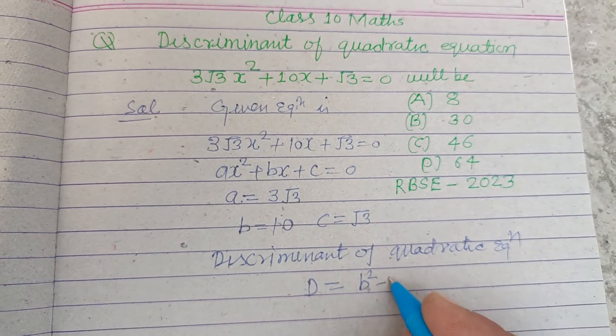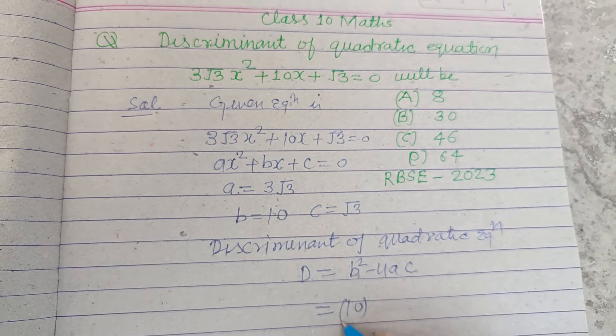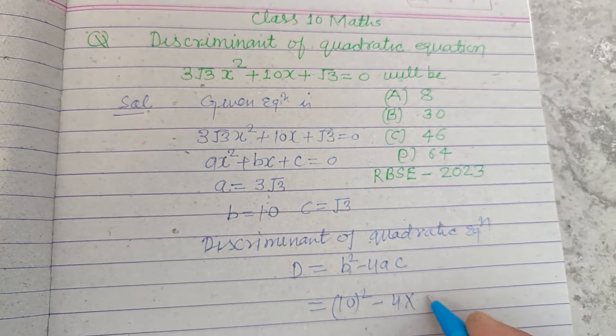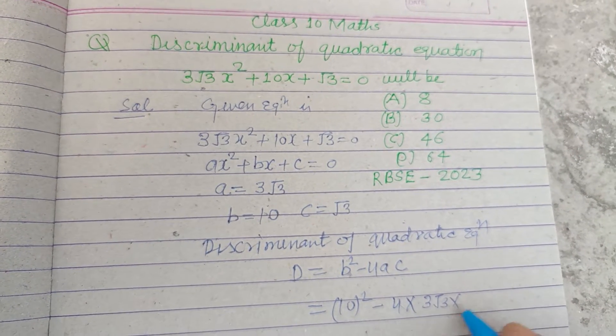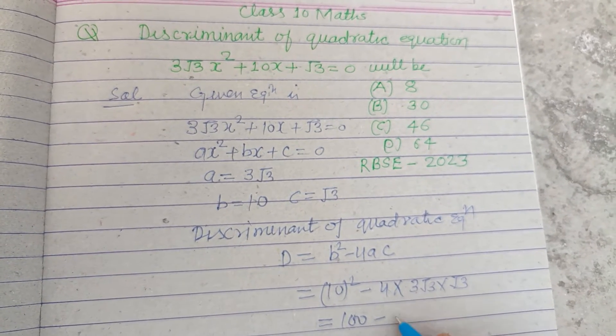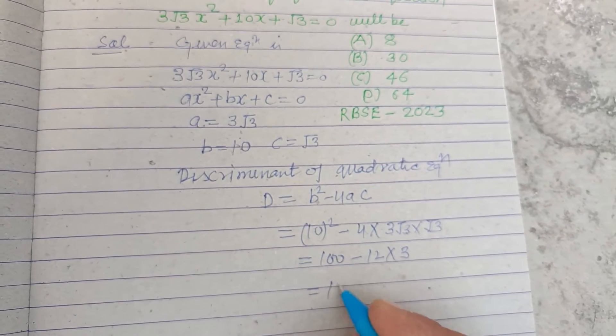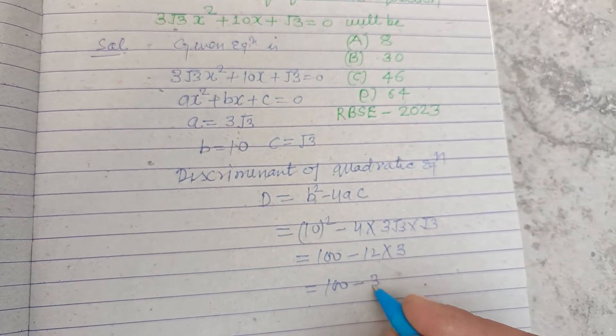D = b² - 4ac. Putting the values: b is 10, 10 squared minus 4, a is 3√3 and c is √3. So this is 100 minus 4 times 3 is 12, and √3 times √3 is 3, so 100 minus 12 times 3 is 36.